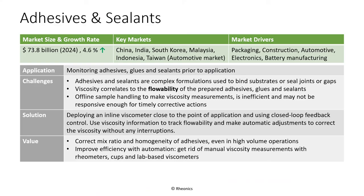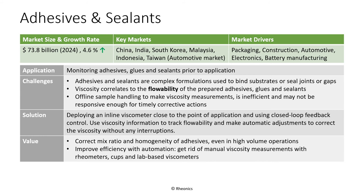Adhesives and sealants is a fast-expanding market, driven by growth in packaging, construction, automotive, electronics, and battery manufacturing. Viscosity correlates to the flow ability of prepared adhesives, glues, and sealants. Offline sample handling to make viscosity measurements is inefficient and may not be responsive enough for timely corrective actions. Viscometer-powered closed-loop feedback control systems make continuous adjustments to formulation, ensuring correct mix ratio, homogeneity, and consistent flow behavior of sealants at the point of application.